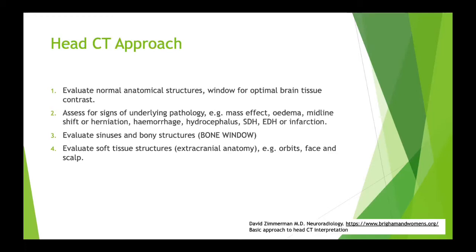Always run through soft tissue windows to assess all extracranial anatomy - look at the orbits, the rest of the face, and the scalp. If you don't appreciate a bone fracture, a useful tip is to change to soft tissue window and see if there's scalp swelling, then look again carefully at that underlying skull to make sure you're not missing a linear fracture.